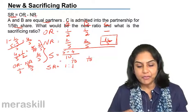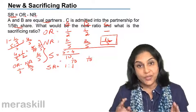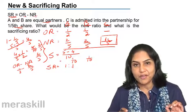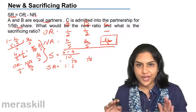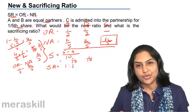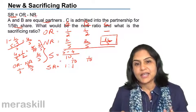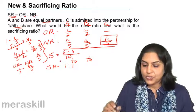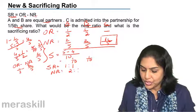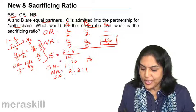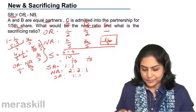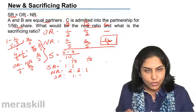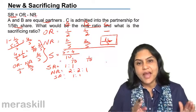It may be noted that if the ratio between the old partners has not changed — they were equal partners before and their ratio is still two-fifths to two-fifths — then the sacrificing ratio will be the same as their old ratio. So when the ratio between the old partners remains the same after admission, we need not do this computation; we know the sacrificing ratio would be the same as the old ratio.